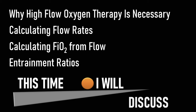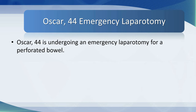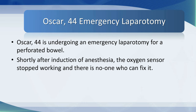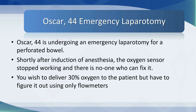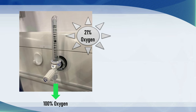To really understand entrainment ratios, it's worth visiting the operating room. Oscar is a 44-year-old male having an emergency laparotomy for a perforated bowel. Shortly after induction of anesthesia, the oxygen sensor stopped working and there is no one available to fix it, so you cannot measure the inspired and expired oxygen tension. You wish to deliver 30% oxygen to the patient but have to figure it out using only flow meters. The gas from a flow meter labeled oxygen is almost 100% oxygen, and room air is 21% oxygen.